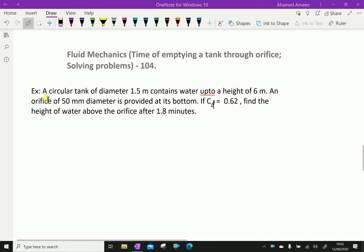Look at this example. A circular tank of diameter 1.5 meter contains water up to a height of 6 meter. An orifice of 50 mm diameter is provided at its bottom. If Cd equals 0.62, find the height of water above the orifice after 1.8 minutes.